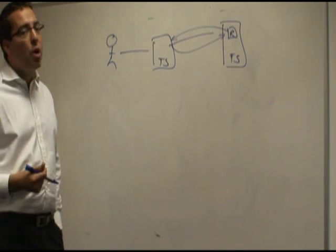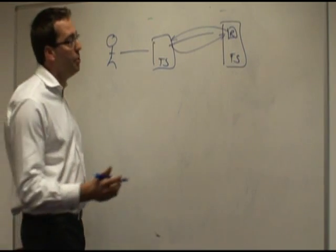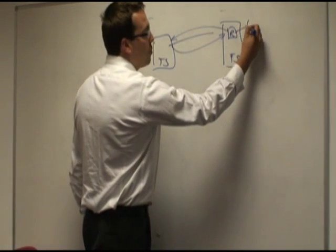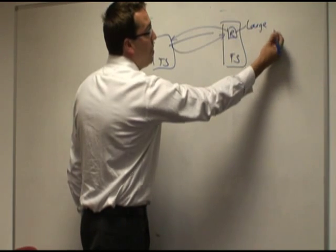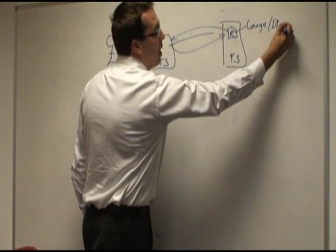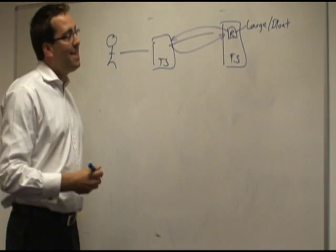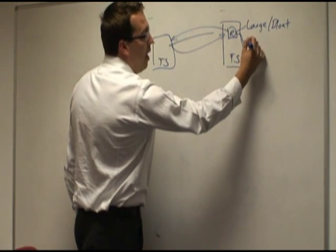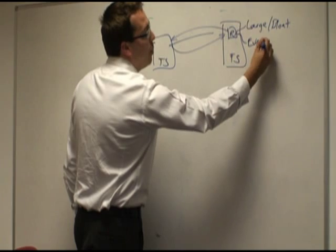Inherently, these roaming profiles over time start to have a number of issues. Number one, they become very large in size, something we call profile bloat. Secondly, they contain everything about the user's environment, so they're not granular and not efficient.